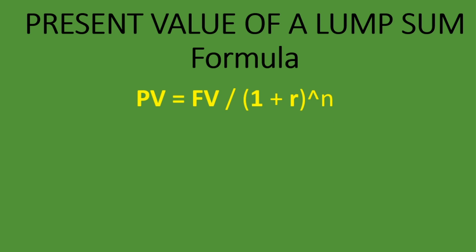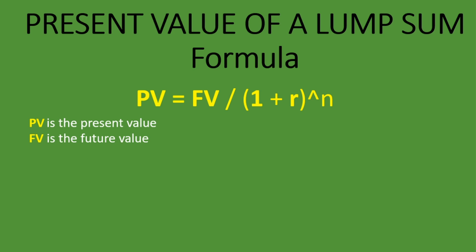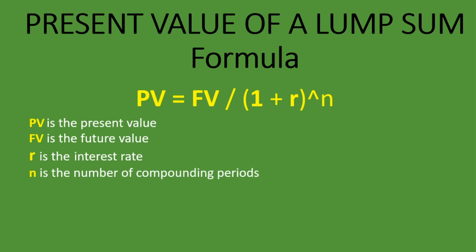Here it is. Present value, or PV, equals FV divided by 1 plus R to the power of N. PV is the present value which we are trying to calculate. FV is the future value. R is the interest rate — it may be written as R or I, so both letters stand for the interest rate. And N stands for the number of compounding periods.